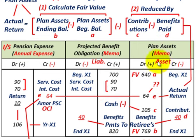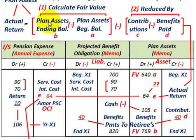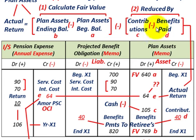The plan assets is the asset account to keep track of our pension fund. What we're really going to concentrate on is this actual return. When we think about this actual return, we normally think of just the difference between the plan assets' ending and beginning balance. But when dealing with the pension plan, that has to be reduced by our contributions and our benefits paid — the difference between those amounts. For example, say we have a beginning balance in our plan assets of $640,000.